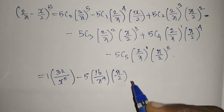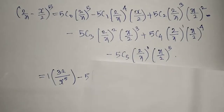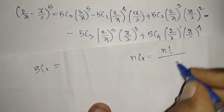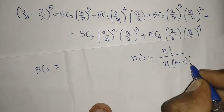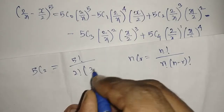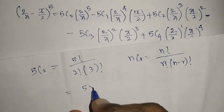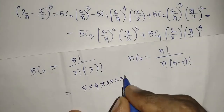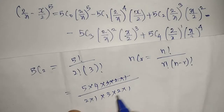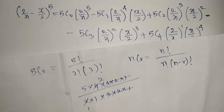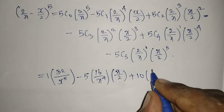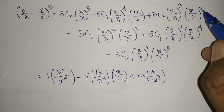Now for 5C2: using the formula nCr = n! / (r! * (n-r)!), we get 5! / (2! * 3!) = (5*4*3*2*1) / (2*1 * 3*2*1) = 10. So 5C2 = 10, multiplied by (2/x)^3 = 8/x^3 and (x/2)^2 = x^2/4.